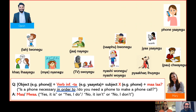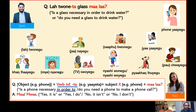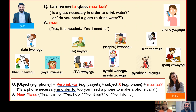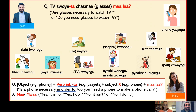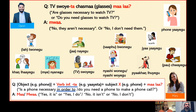For example, I can ask you: la panita, glass mala — 'Is a glass necessary in order to drink water?' or 'Do you need a glass to drink water?' Ma — yes it is necessary or yes I need it. Good. The next one. TV sweater — 'Are glasses necessary to watch TV?' or 'Do you need glasses to watch TV?' Mua — no they are not necessary or no I don't need them.